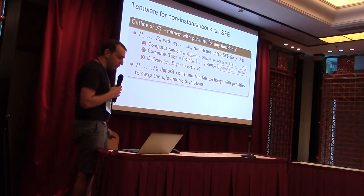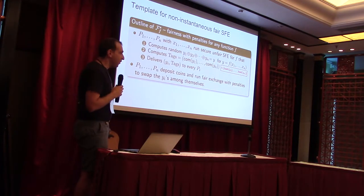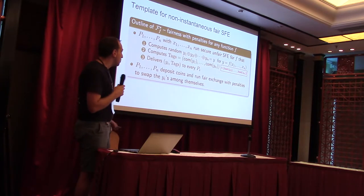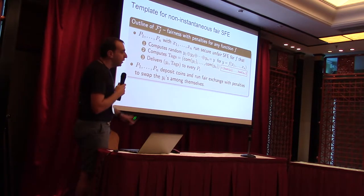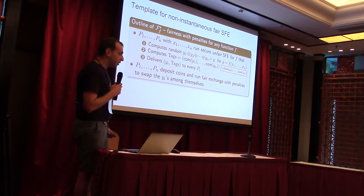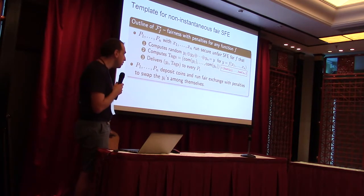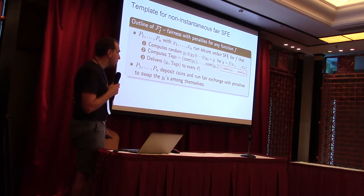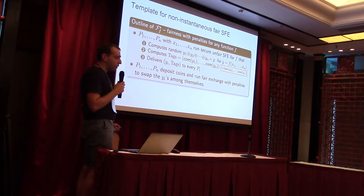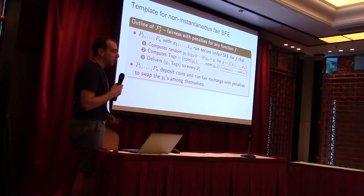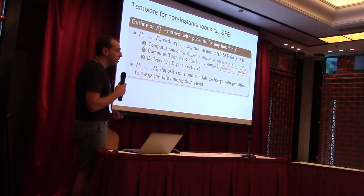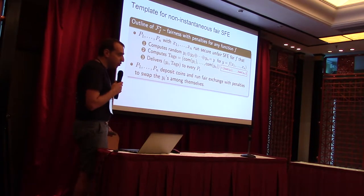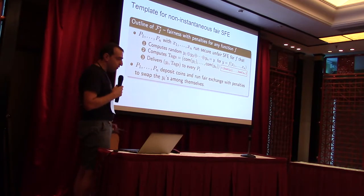Let me describe the template for fair secure function evaluation — nothing reactive yet. You run the secure computation among the parties, and instead of directly delivering the output, the secure computation creates an additive secret sharing of the output. Any subset of shares reveals nothing about the output; all shares combined reveal the output. We give each party one share and hash commitments to all the other shares. Then, if we have a good way to submit security deposits to a cryptocurrency that accounts for these hash commitments and performs fair exchange — such that if a party is dishonest they lose the deposit — we get fair secure computation with penalties.